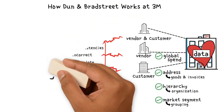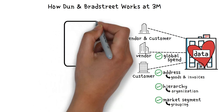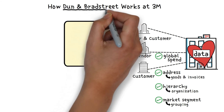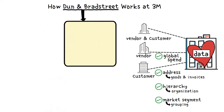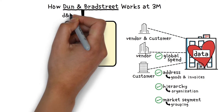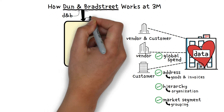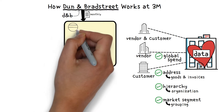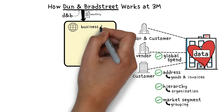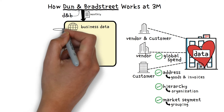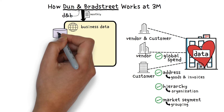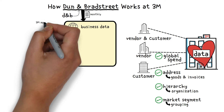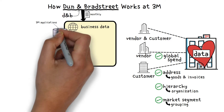Well, there is. The solution to this problem lies in data purchased by 3M from the Dun & Bradstreet Company, often simply referred to as DNB. Each month, 3M receives a file from DNB that contains information about businesses around the world. Once this data arrives, it's stored in GEDW and Snowflake data warehouses for 3M applications to reference.